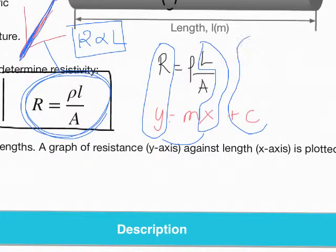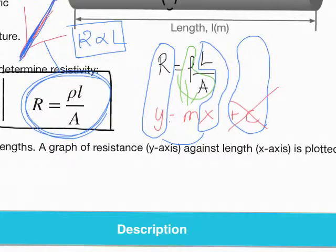We should not get an intercept. So if we do, it must be a systematic error. And our gradient is going to be equal to two things. It's going to be equal to the resistivity divided by the area. Some of you assumed that the gradient was equal to resistivity, but no, as you can see here, resistivity divided by area equals the gradient. So when you eventually find your gradient, you will then need to multiply the gradient by the area in order to find the resistivity.